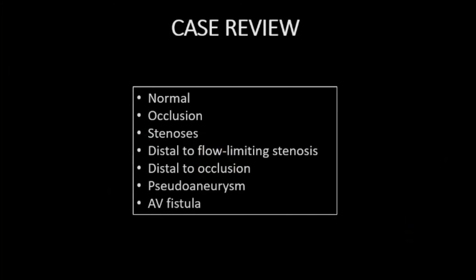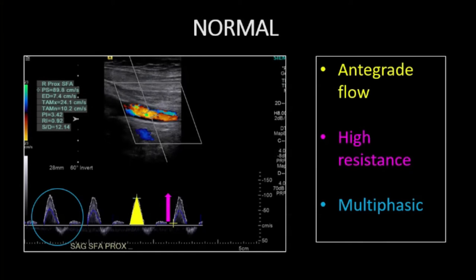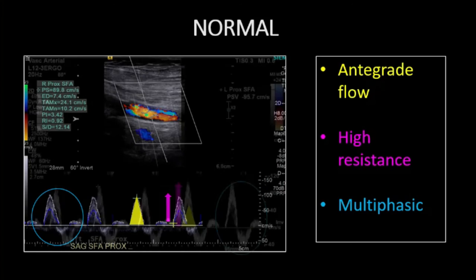Let's begin our case review. Here's a normal superficial femoral artery. Antegrade flow with systole is detected with a sharp upstroke, multiphasic signal is subsequently detected, and the tracing indicates a high resistance artery, which is typical for the SFA.